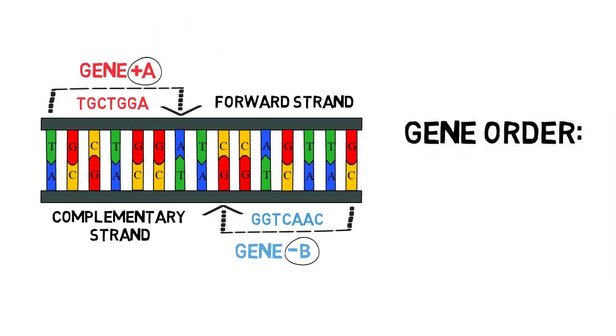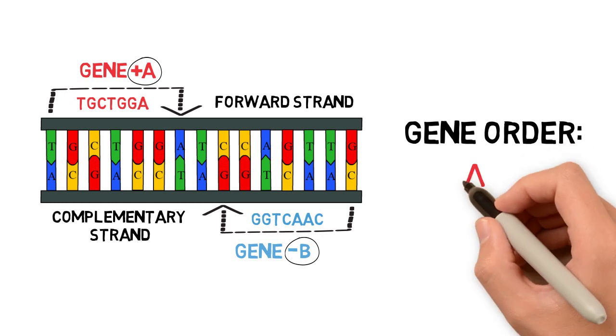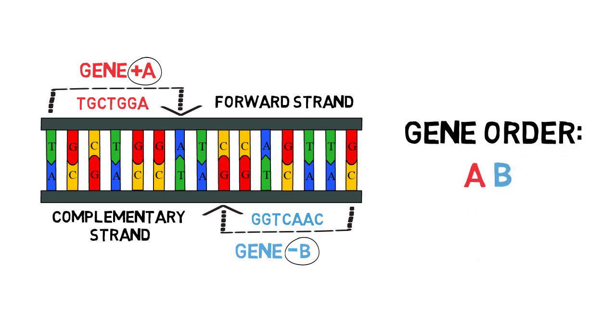In a gene order, we simply label each gene with a number or a character. The idea is to have the same label to represent the same gene in the different genomes being compared.